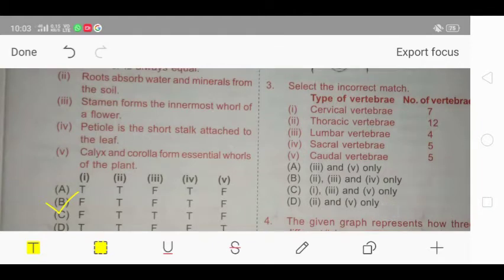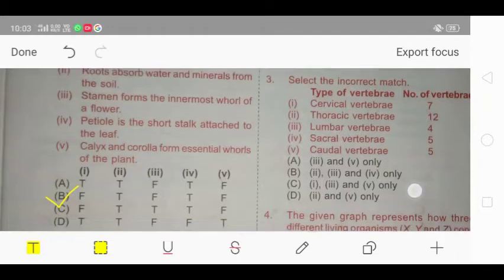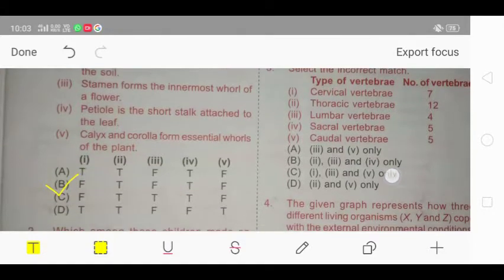Next is question number 3. Select the incorrect match. Cervical vertebrae 7, thoracic vertebrae 12, lumbar vertebrae 4, sacral vertebrae 5, and caudal vertebrae 5.